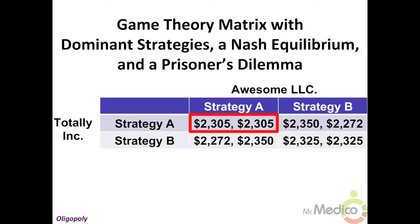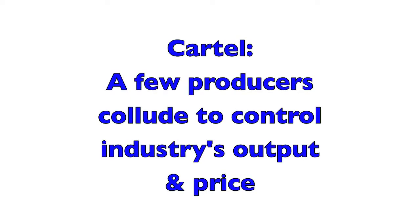Suppose that the firms collude and agree to play Strategy B. The dilemma is whether each firm can trust the other to play Strategy B and not Strategy A. Without a commitment device, each firm has an incentive to cheat to gain greater profit. The likely outcome is that they would both cheat and end up in the original Nash equilibrium.